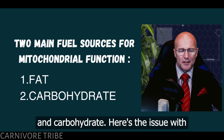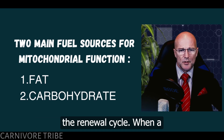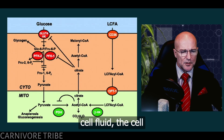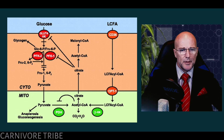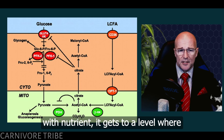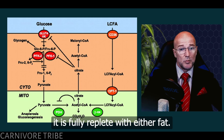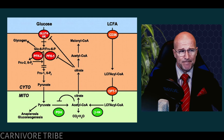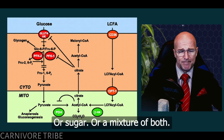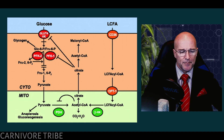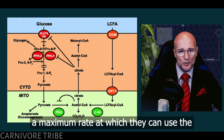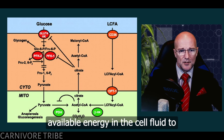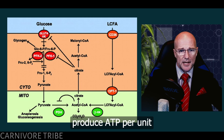There are two main fuel sources for mitochondrial function: fat and carbohydrate. Here's the issue with the Randall cycle. When a cell's cytosol fills up with nutrient — reaching a level where it is fully replete with either fat, sugar, or a mixture of both — the mitochondria in every cell of your body have a maximum rate of respiration, a maximum rate at which they can use the available energy to produce ATP.